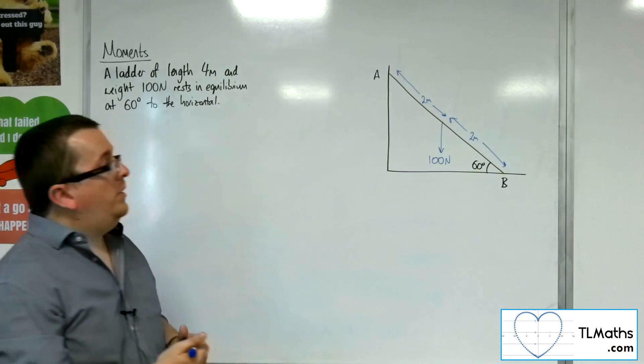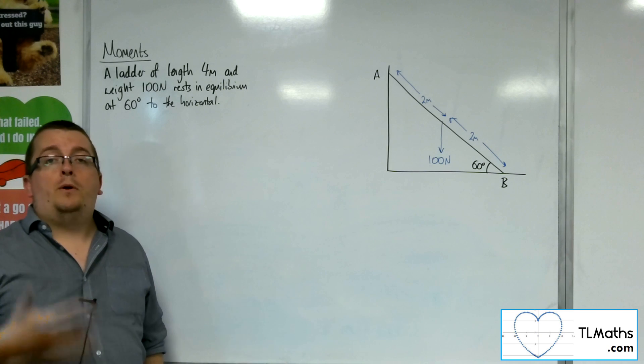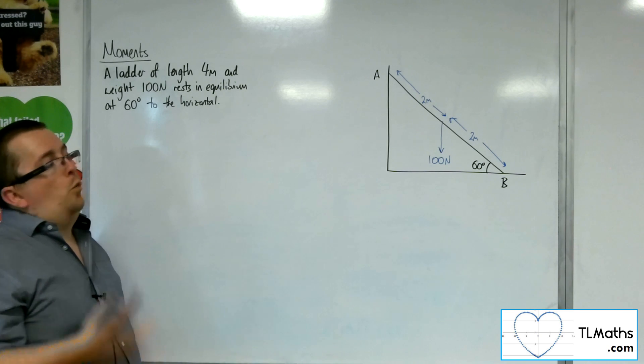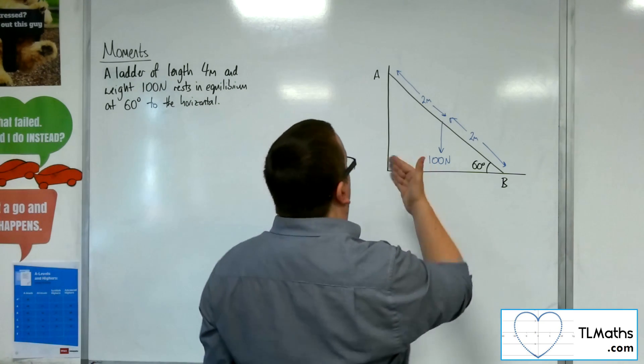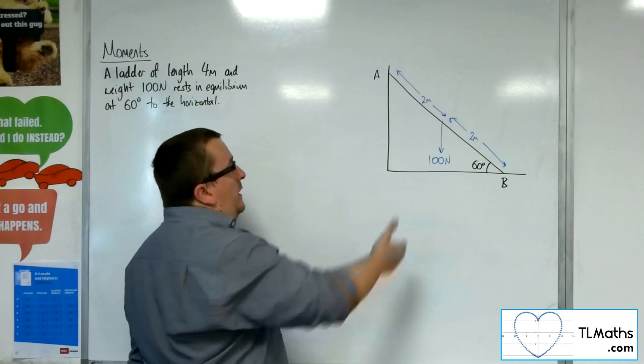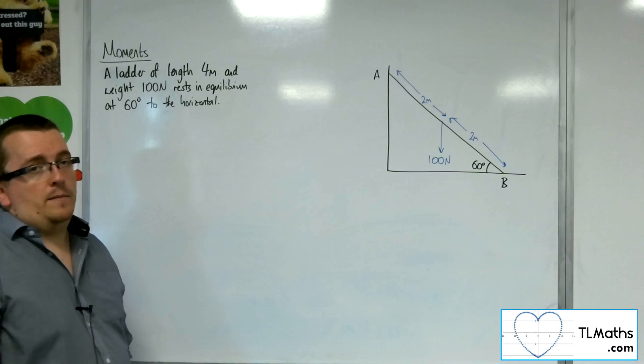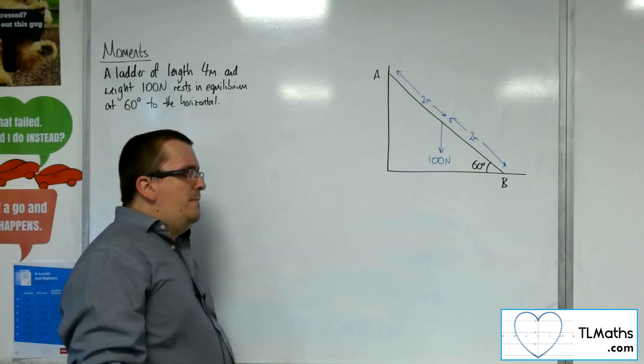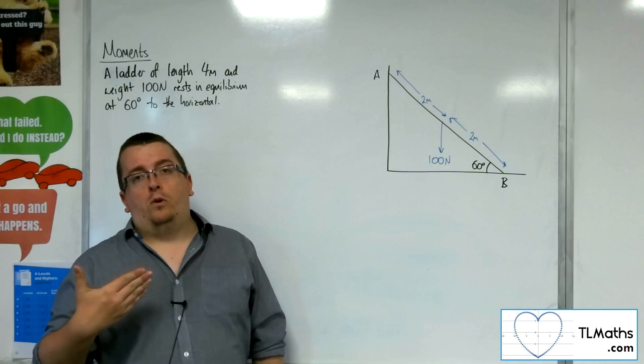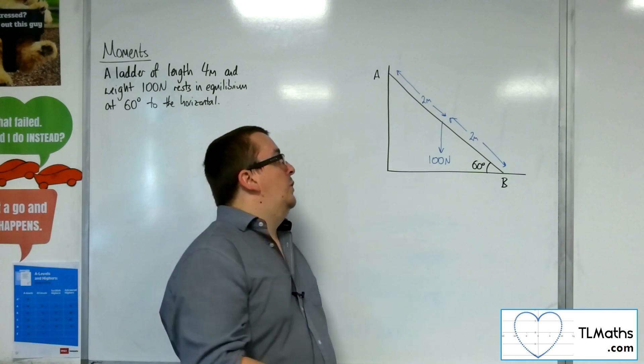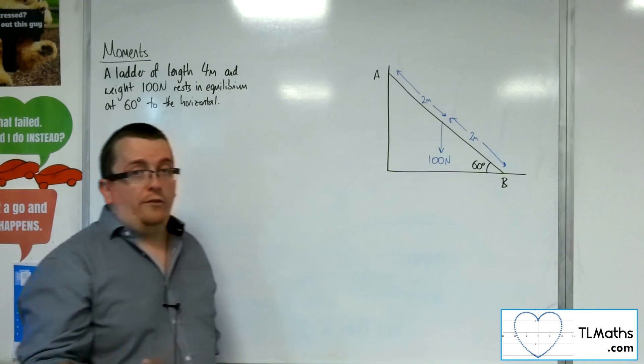Now, if the floor and the wall are both smooth, then what do you think is going to happen to the ladder? Well, if the floor and the wall are both smooth, then the ladder is just going to go and then fall down. There'll be nothing holding it in place. So it doesn't really make sense to look at situations where you've got this ladder set up against a smooth wall and a smooth floor. So let's say that the floor was rough.